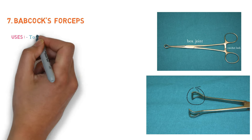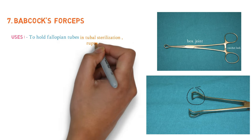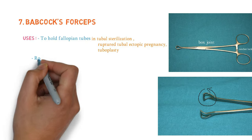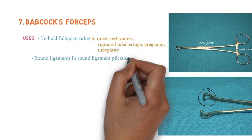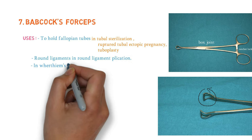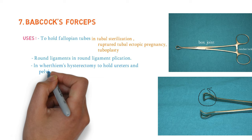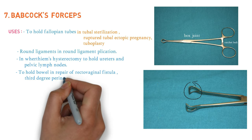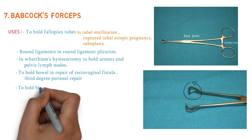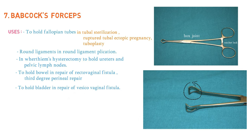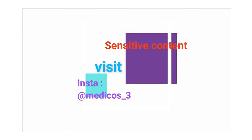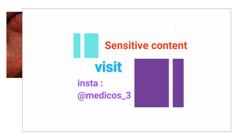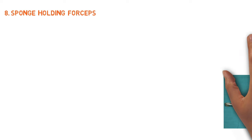The uses of Babcock's forceps include: to hold the fallopian tube in tubal sterilization, ruptured tubal ectopic pregnancy, and tuboplasty; to hold the round ligament in round ligament placation; in Wertheim's hysterectomy to hold the uterus and pelvic lymph nodes; to hold the bowel in repair of rectovaginal fistula and third-degree perineal repair; and to hold the bladder in repair of vesicovaginal fistula.